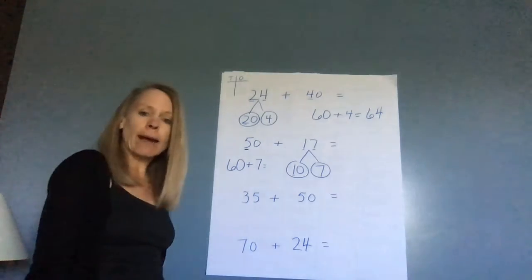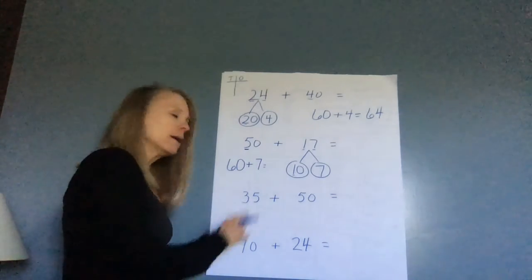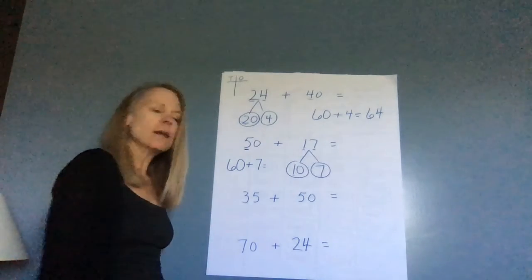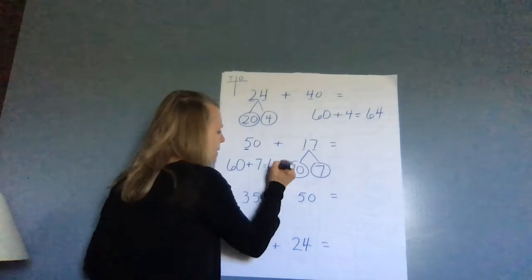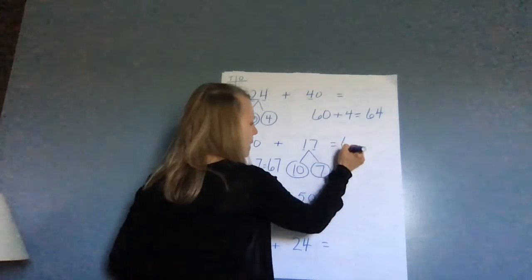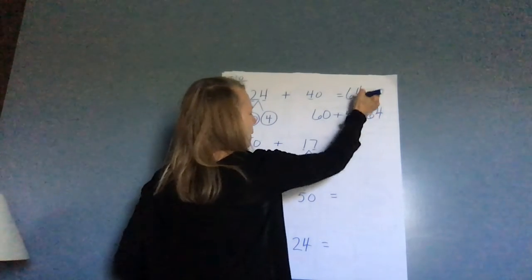Now I'm going to add my ones onto it. So how much do I have? 60 plus seven more. Remember, I'm just going to take that seven and put it on that zero. And so I know I have 67. So 50 plus 17 is 67.